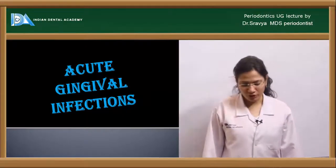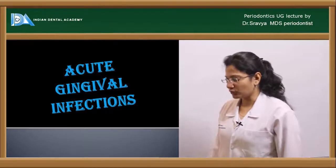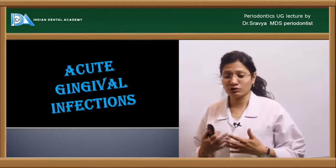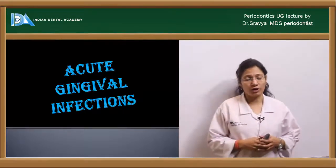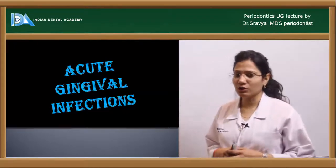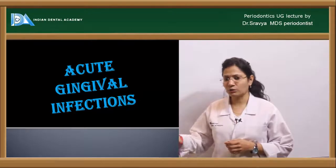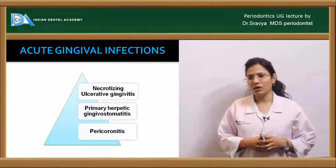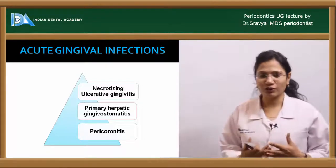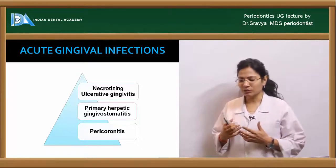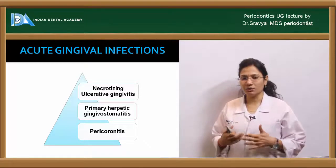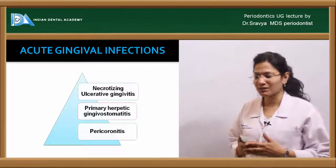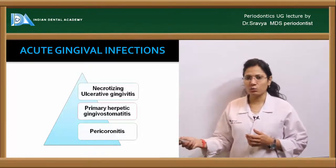The topic is acute gingival infections. Most gingival diseases are usually chronic, but certain conditions occur at a very acute stage. The three important acute gingival infections are: necrotizing ulcerative gingivitis, primary herpetic gingivostomatitis, and pericoronitis. Let us talk in detail about each one of these lesions.